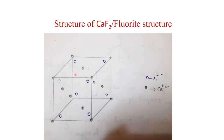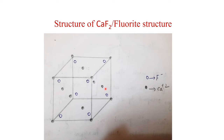Now let us discuss the structure of calcium fluoride, or the fluorite structure. This is a cubic close-packed or face-centered cubic arrangement. We draw a cube where the filled circles represent Ca²⁺ ions and open circles represent F⁻ ions. Calcium ions occupy all corners and the center of each face. Fluoride ions occupy the tetrahedral voids, which are located along the body diagonals.